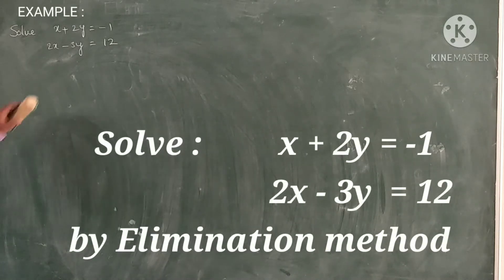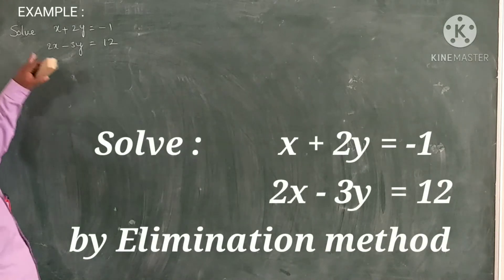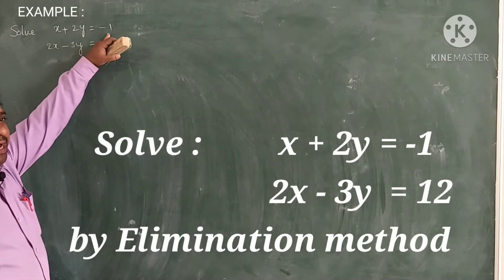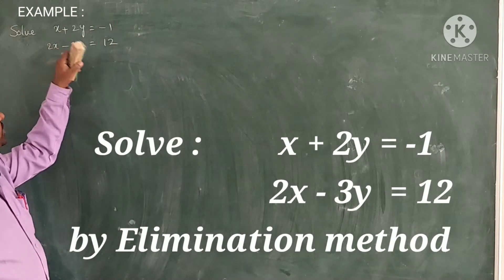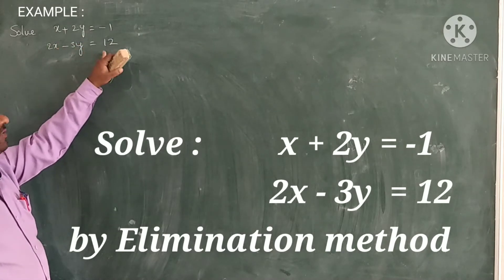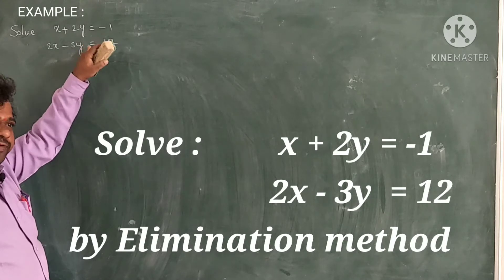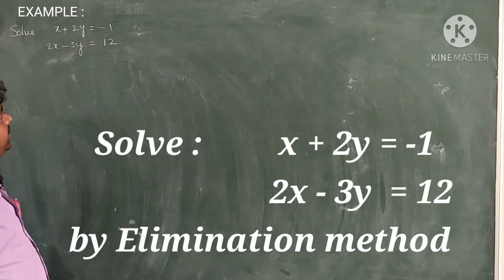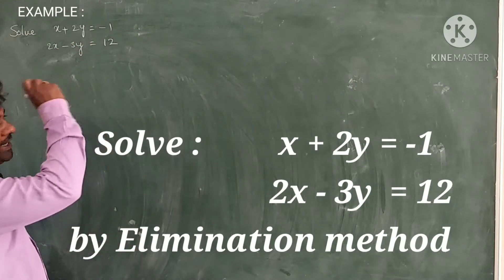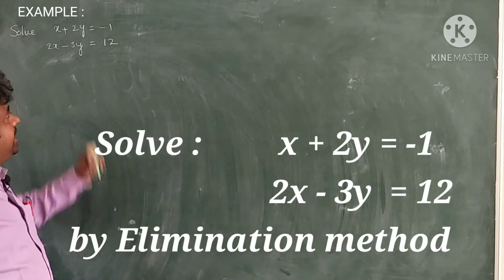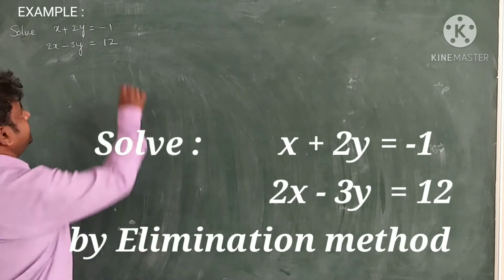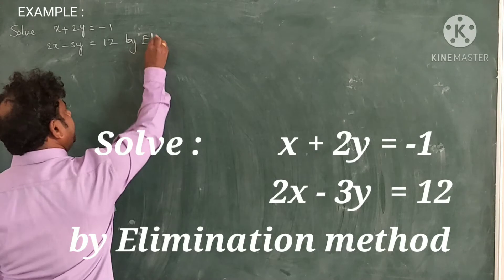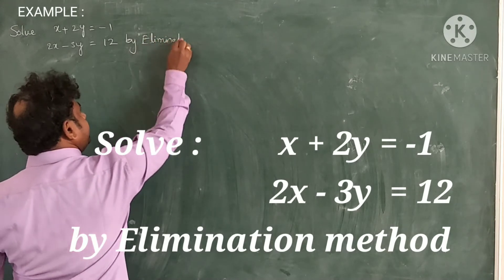Students, observe another example. Solve x plus 2y is equal to minus 1 and 2x minus 3y is equal to 12. This is a pair of equations in two ways. Now, let us solve by elimination method.